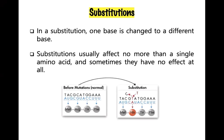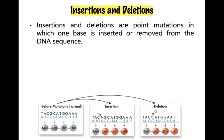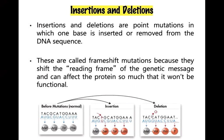Insertions and deletions are point mutations in which one base is inserted or removed from the DNA sequence. These are called frameshift mutations because they shift the reading frame. If a nucleotide is added or deleted, the bases are still read in groups of three, but those groupings shift in every codon that follows the mutation.